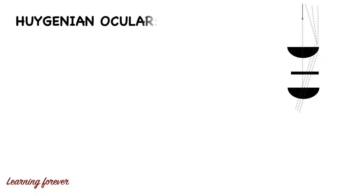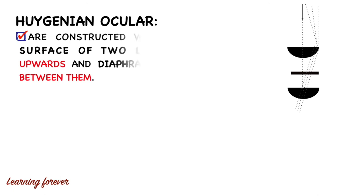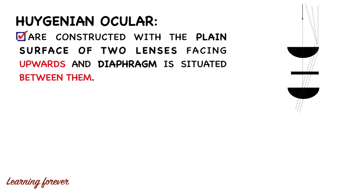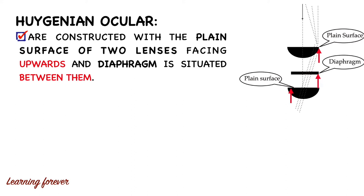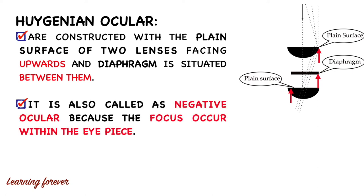The Huygenian ocular is constructed with the plane surface of two lenses facing upward, and the diaphragm is situated between them. It is also called a negative ocular because the focus occurs within the eyepiece. You can see here that the focus occurs within the eyepiece, which is why it is called a negative ocular.